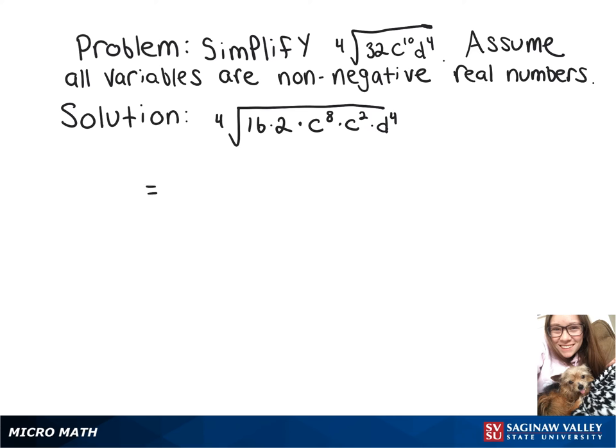So the fourth root of 16 is 2, and then for the fourth root of c to the 8th, we just divide that exponent by 4, giving us c squared. Same with the d to the 4th, so that'll give us just d.